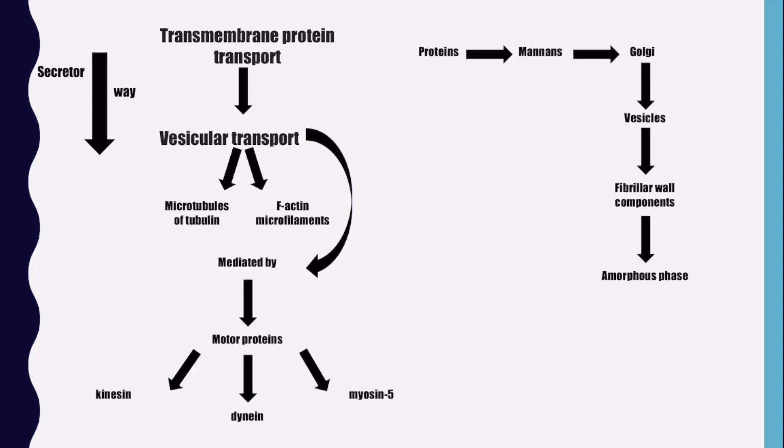Transmembrane enzymes that are responsible for the mannan production are fully synthesized in the Golgi apparatus and transported via vesicular pathways to the cell exterior so that they can react with the fibrillary components of the cell wall and establish the amorphous phase.